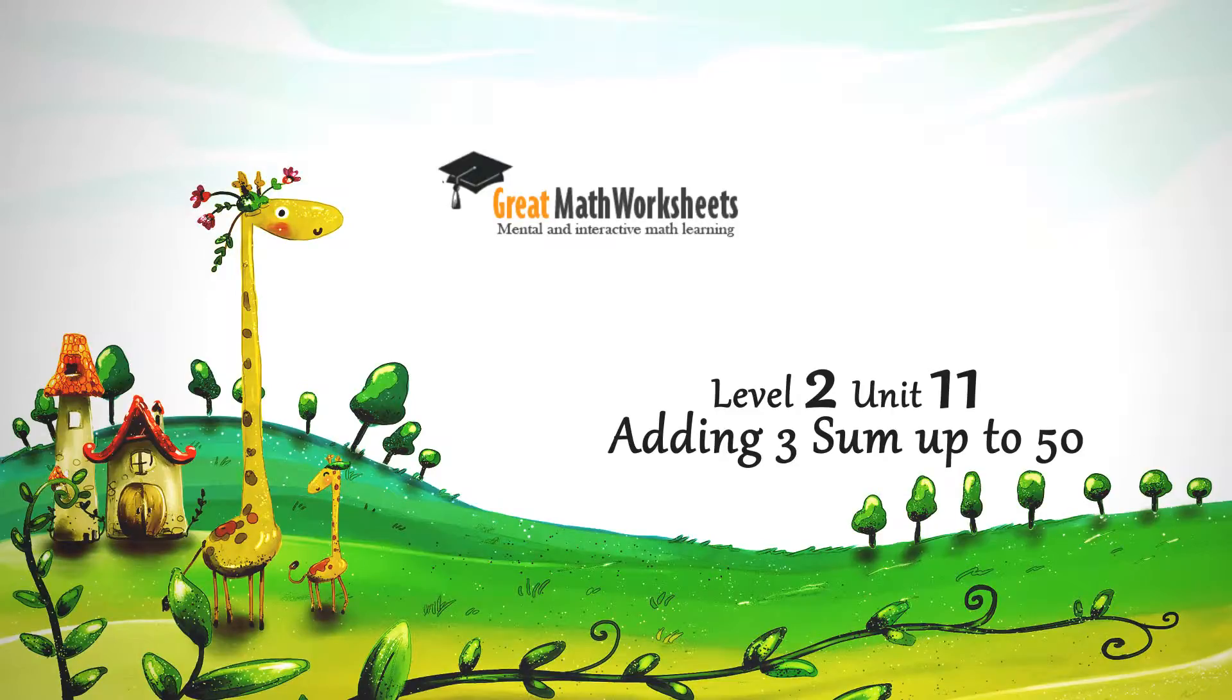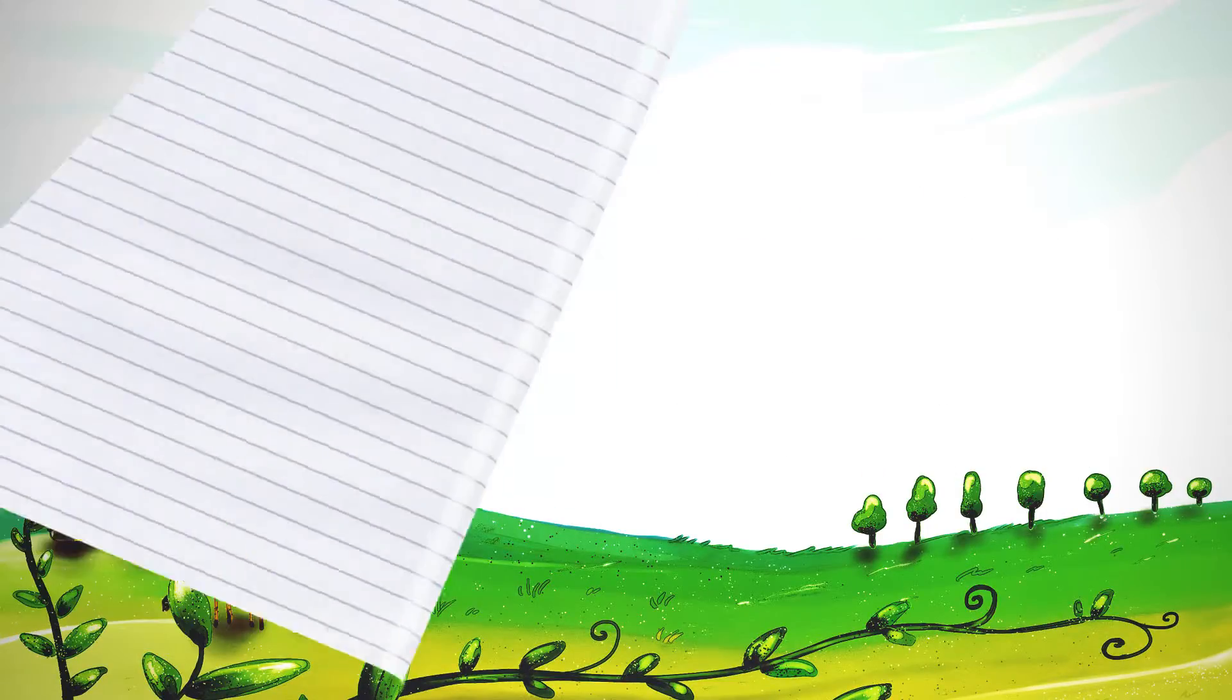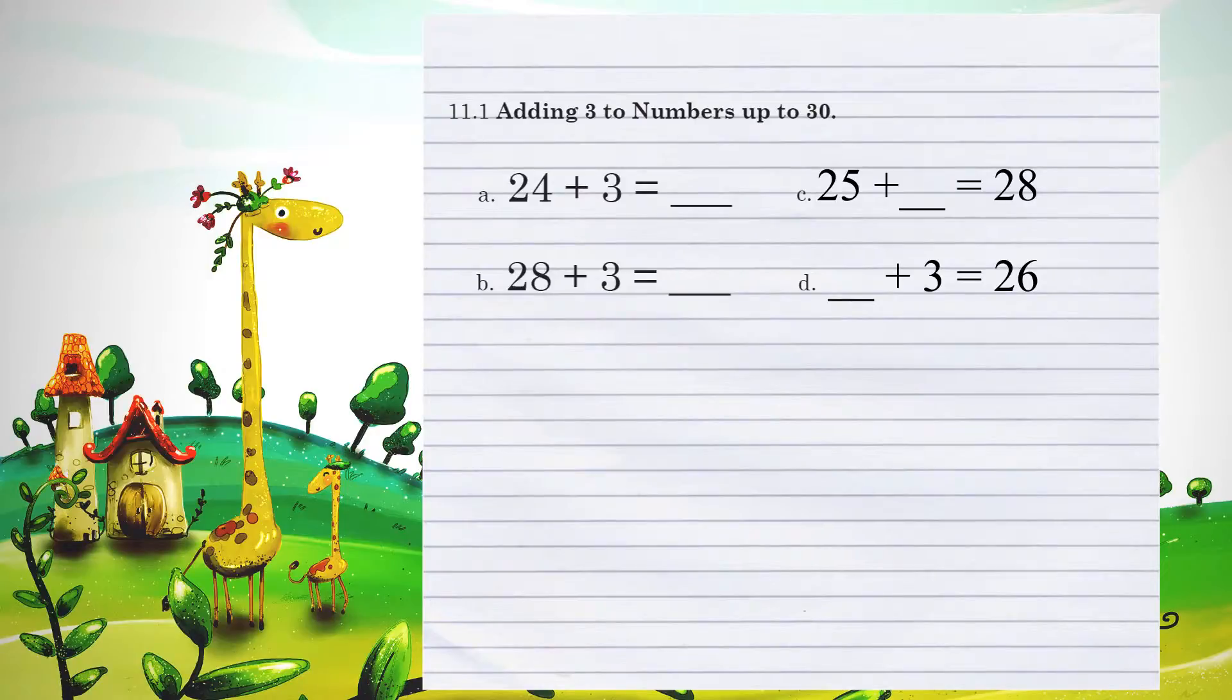Level 2, Unit 11, adding 3 sum up to 50. Unit 11.1, we are adding 3 to numbers up to 30.